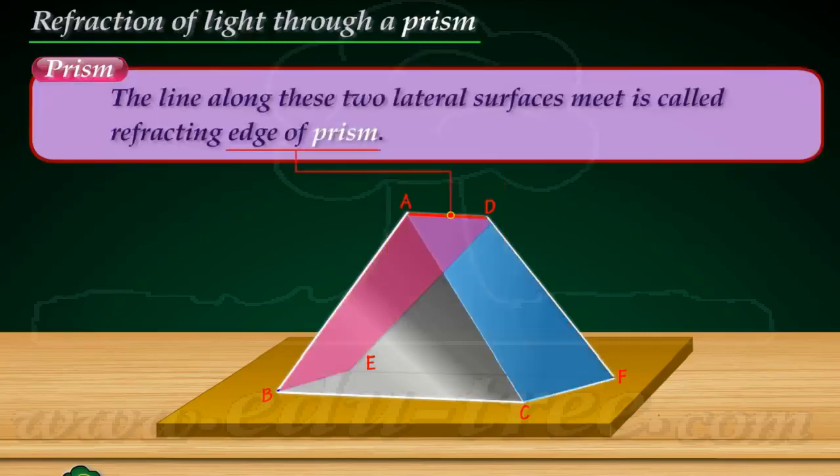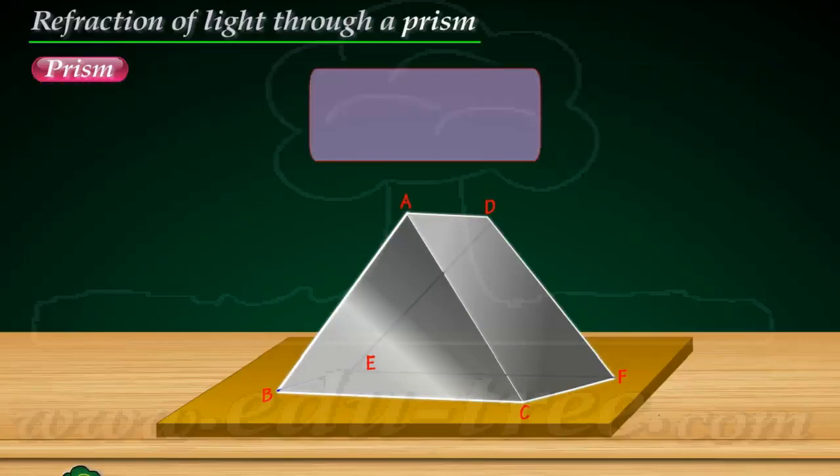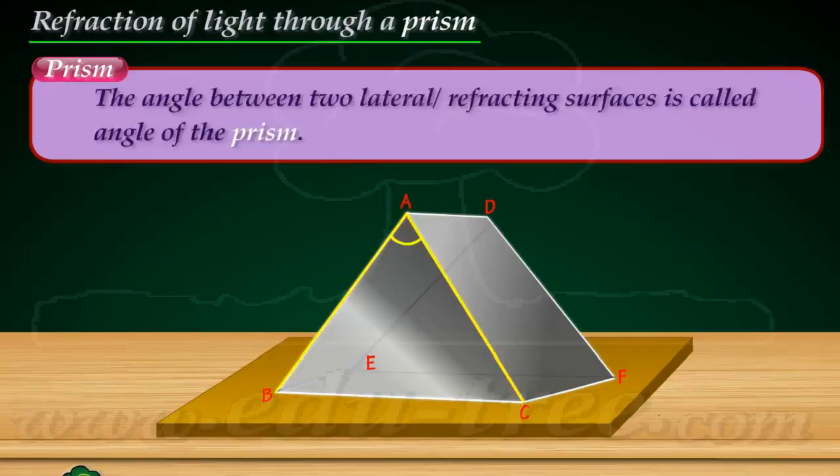The line along which these two lateral surfaces meet is called the refracting edge of the prism. The angle between two lateral or refracting surfaces is called the angle of the prism.